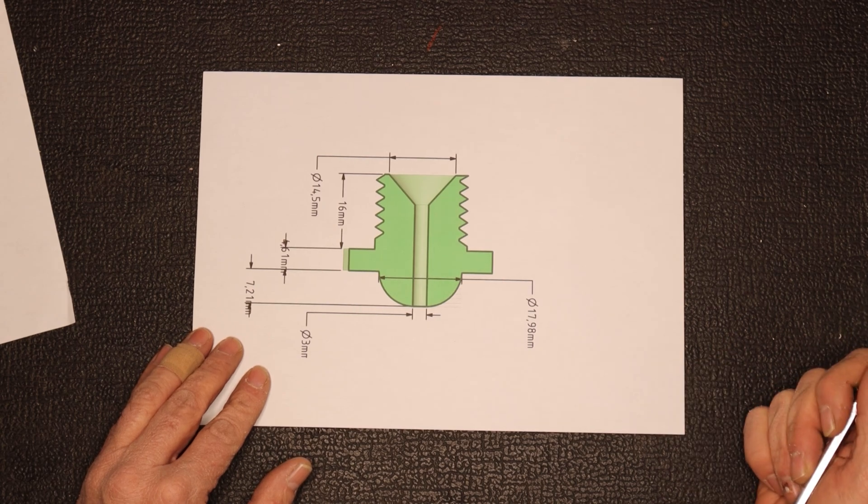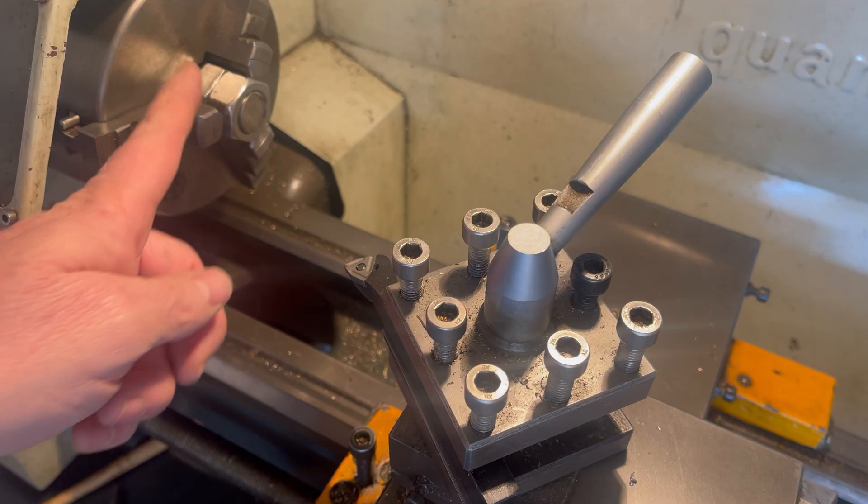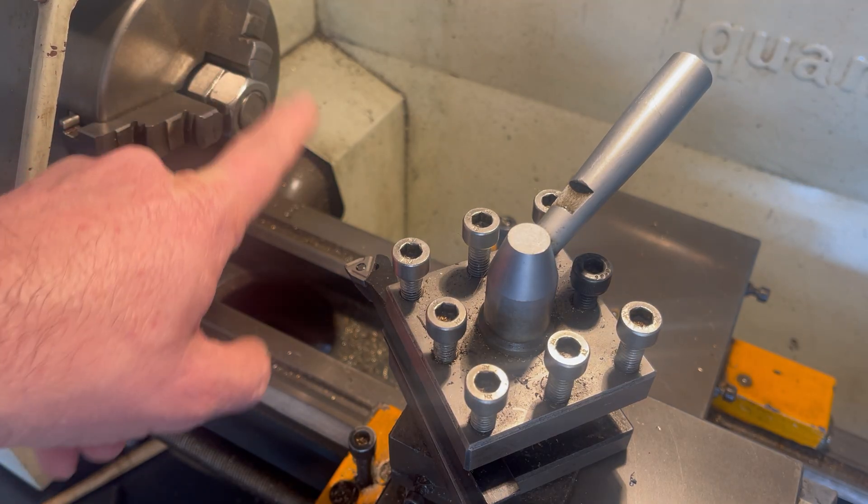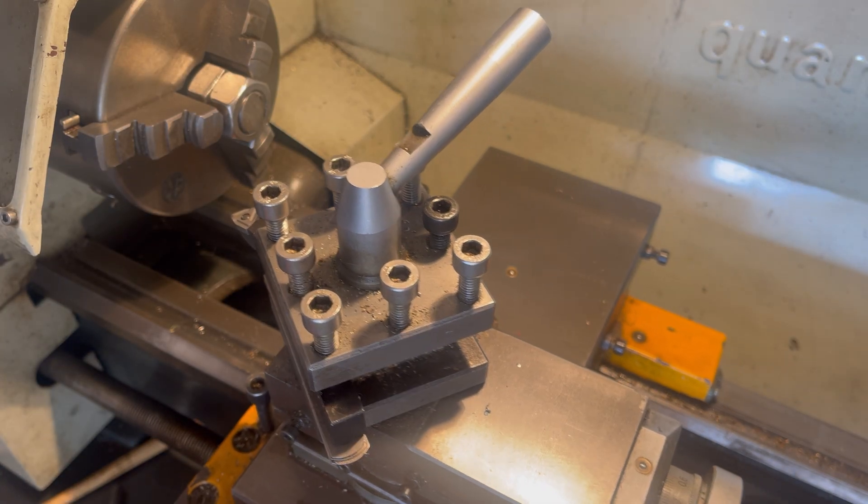So let's head over to the lathe and make this. The first thing I'm going to do is face off the bolt which I've already cut off and it's in a nut in the chuck over here. So the bolt, nut cut off, chuck in the chuck, and then I'm just going to face it off first.